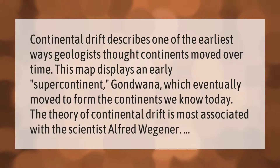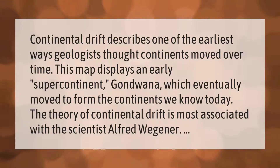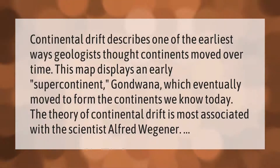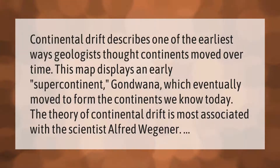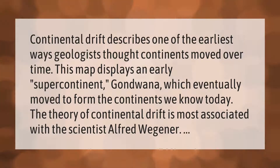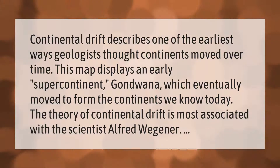Continental drift describes one of the earliest ways geologists thought continents moved over time. This map displays an early supercontinent, Gondwana, which eventually moved to form the continents we know today. The theory of continental drift is most associated with the scientist Alfred Wegener.